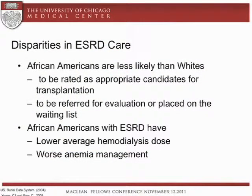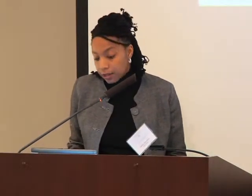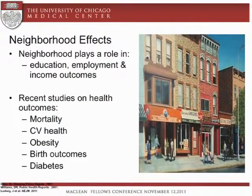We know that there are important disparities in end-stage renal disease care. African Americans are less likely than whites to be rated as appropriate candidates for transplantation, and of those deemed appropriate, they're less likely to be referred for evaluation or placed on the transplant waiting list. Additionally, African Americans with end-stage renal disease have, on average, a lower hemodialysis dose and worse anemia management. These disparities are important because they translate into important differences in morbidity, mortality, and quality of life. The question is whether these racial disparities are explained in part by differences in dialysis facility quality, and whether that is determined by location.